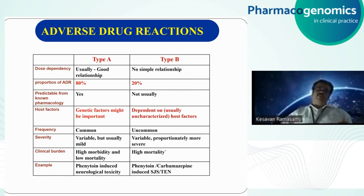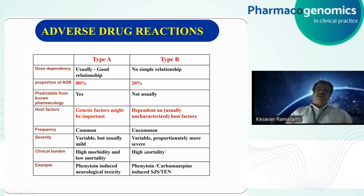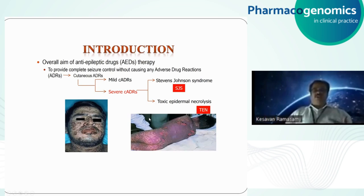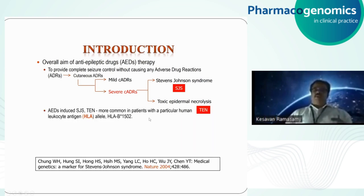The other type is idiosyncratic — type B reactions — where phenytoin may cause serious cutaneous adverse reactions like Stevens-Johnson syndrome and toxic epidermal necrosis. It is commonly seen in patients treated with anti-epileptics like phenytoin and carbamazepine. Research identified that it is more commonly seen in patients carrying the particular human leukocyte antigen allele HLA-B*1502. This was first reported in 2004.